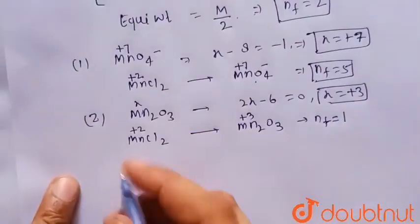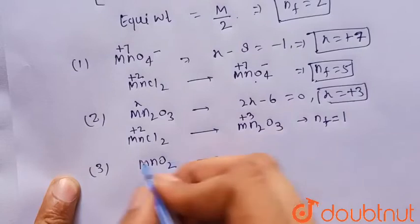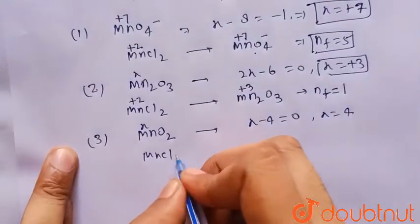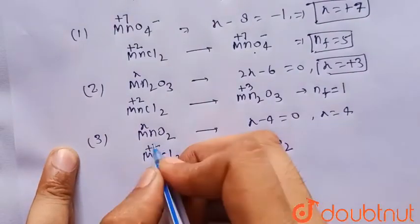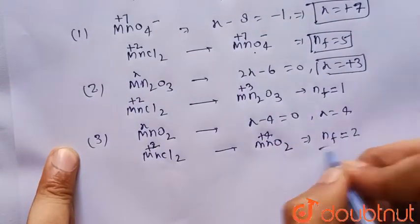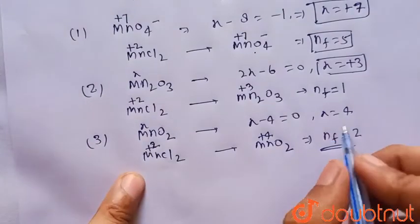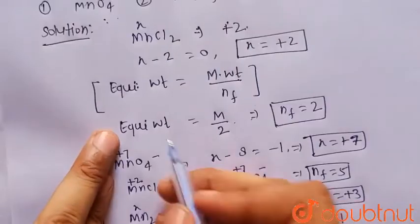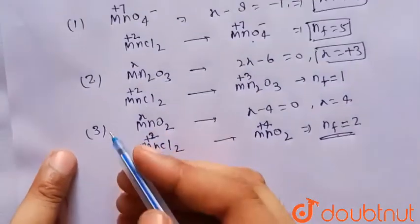Now consider MnO2. Here x − 4 = 0, so x = +4. When MnCl2 (Mn = +2) is converted to MnO2 (Mn = +4), the change in oxidation number is 4 − 2 = 2, so n-factor = 2. This is our desired answer, because the equivalent weight equals half the molecular weight only when n-factor = 2.